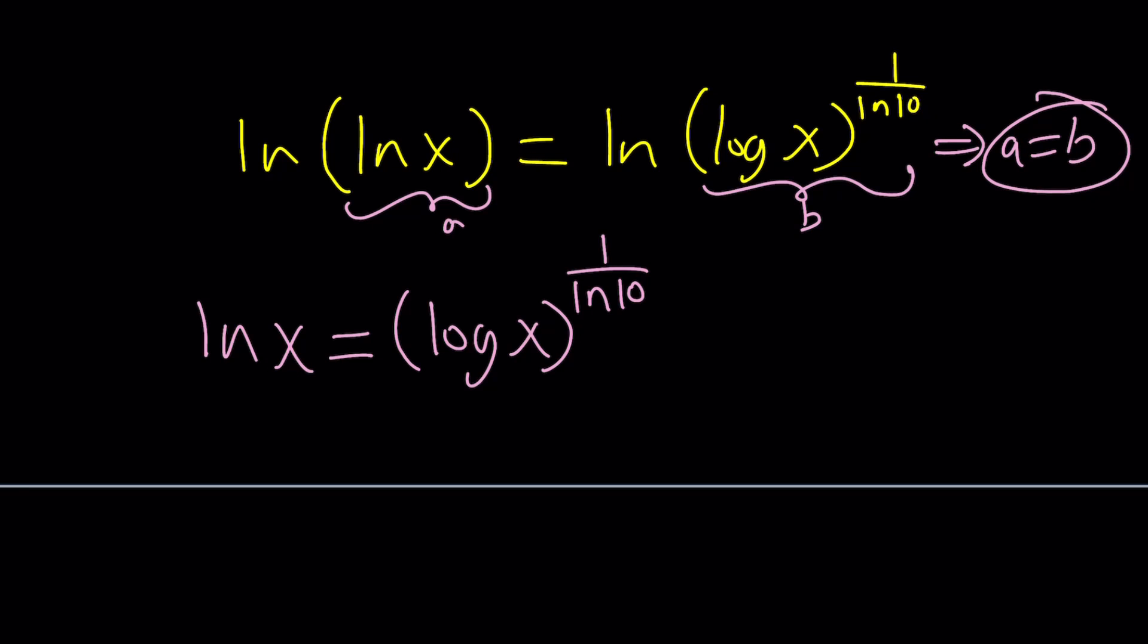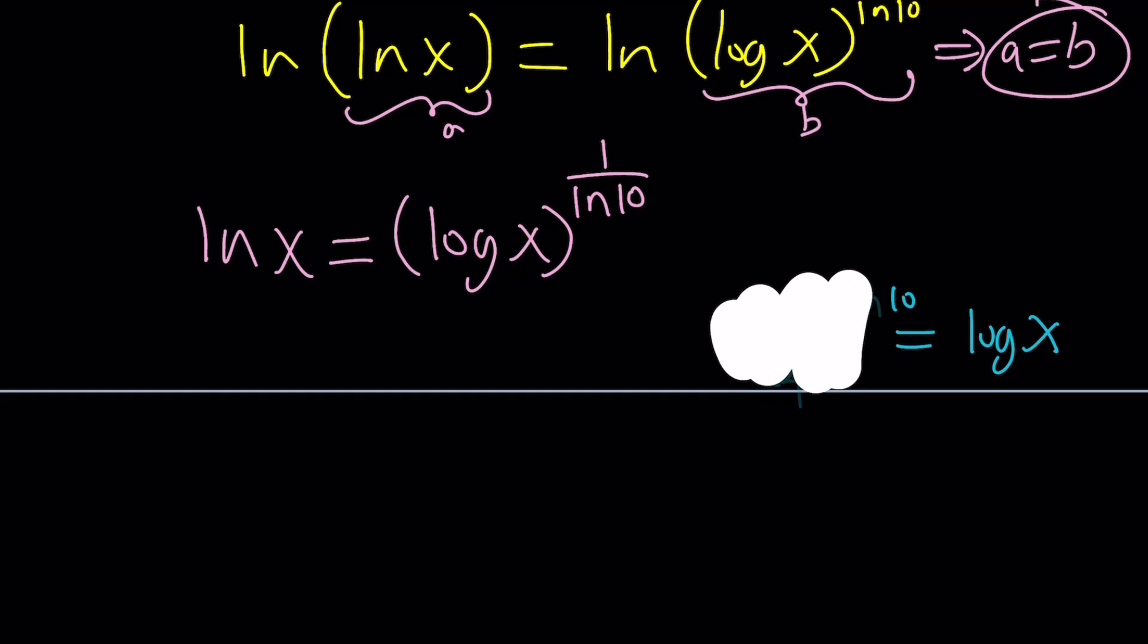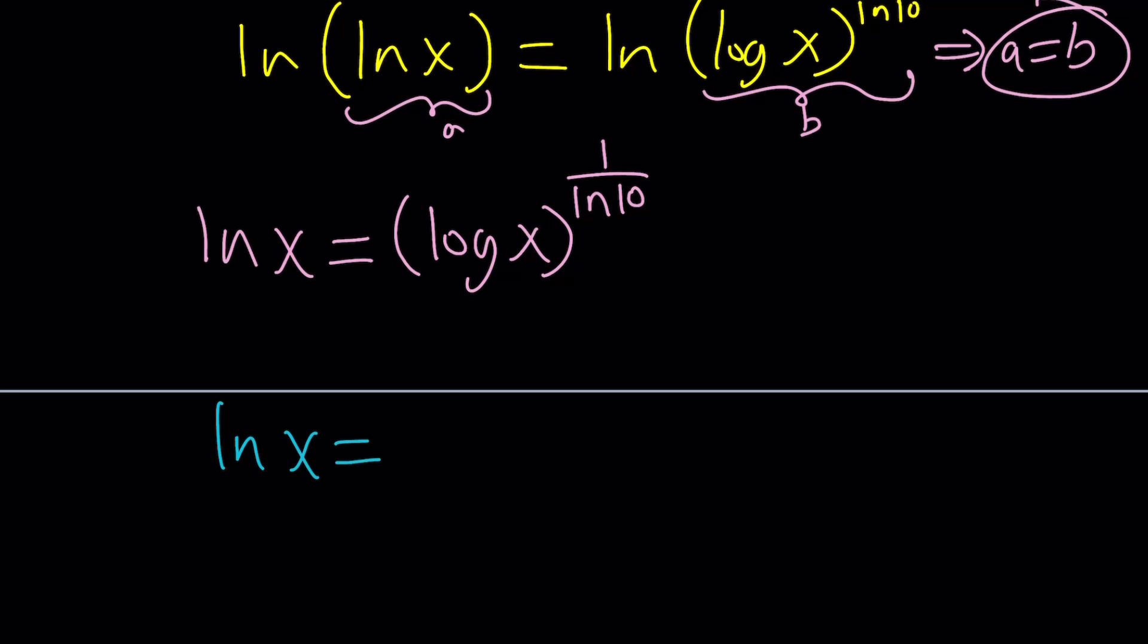Now we got a simpler equation. At least it was kind of two layers. Now we have one layer. How do you solve this? Again change of base, right? How do you write log x? Let's turn it into ln. I mean you can also do the other way around. It doesn't really matter because one of the things that you can definitely do here is raise both sides to the power ln 10 and that'll give you ln x to the power ln 10 equals log x. It's not necessary. I'm just going to turn log so that I end up with an ln because I like ln better. So we're going to write this log x as ln x over ln 10 and then we're going to raise it to the power one over ln 10.